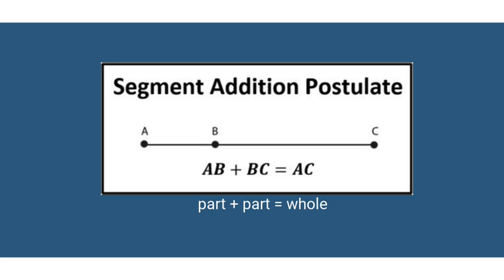which when we add them together equals the length of the whole segment. And notice the points A, B, and C are collinear. So point B is between A and C. And we get that AB + BC = AC. Once again, part plus part equals whole.